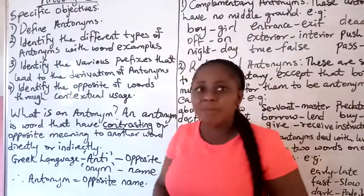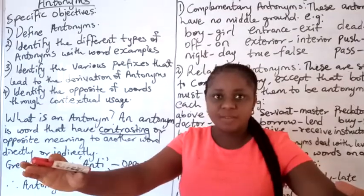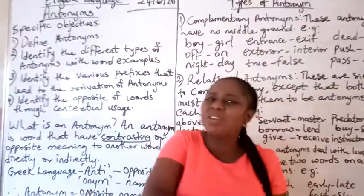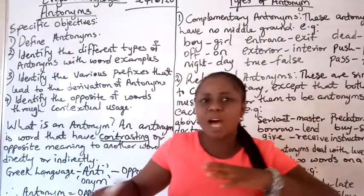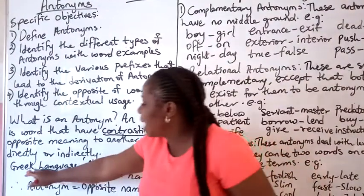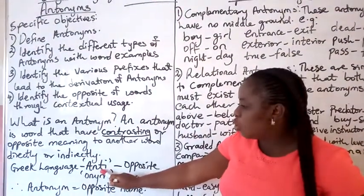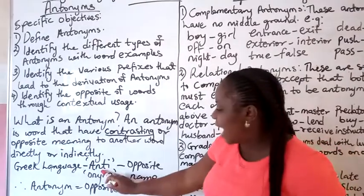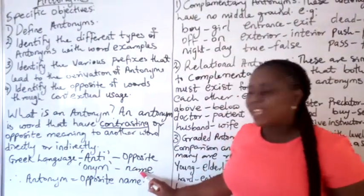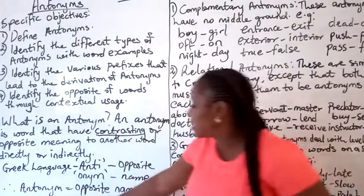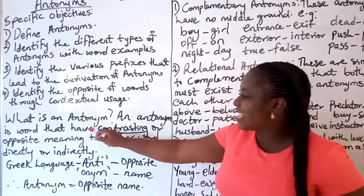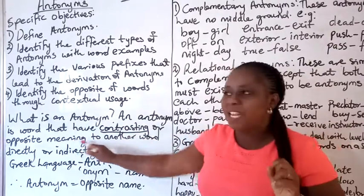What do we mean by directly or indirectly? Sometimes you can easily identify these words without any stress on the meaning. Other times, you will need to understand how they are used in a sentence — that is what we call contextual usage — and from that contextual usage you can get the opposite in meaning. Antonyms come from Greek: "anti" meaning opposite and "onym" meaning name, so antonyms simply means opposite name.